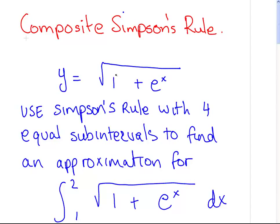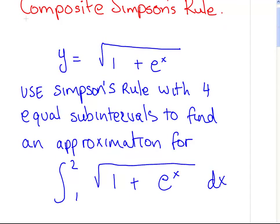So, essentially, I've written out the function here, but I'll just state the full question. Use Simpsons rule with four equal subintervals, that's important, to find an approximation for this integral here, integral from 1 to 2 of the square root of 1 plus e to the x.